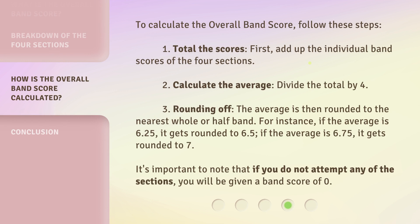To calculate the overall band score, follow these steps. 1. Total the scores: First, add up the individual band scores of the four sections. 2. Calculate the average: Divide the total by four. 3. Rounding off: The average is then rounded to the nearest whole or half band. For instance, if the average is 6.25, it gets rounded to 6.5. If the average is 6.75, it gets rounded to 7. It's important to note that if you do not attempt any of the sections, you will be given a band score of 0.